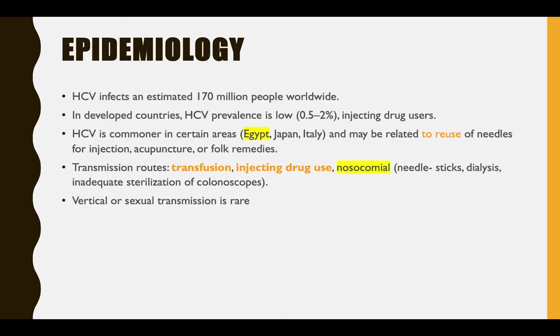For epidemiology, HCV infects 170 million people worldwide. It is a huge problem in Egypt and some European countries. High prevalence could be related to reuse of needles, acupuncture, or folk remedies in countries like China. Transmission is mainly through needles — transfusion, injecting drugs, nosocomial transmission, needle stick injury, and dialysis. Most transmission routes involve needles. Vertical and sexual transmission is rare with HCV.